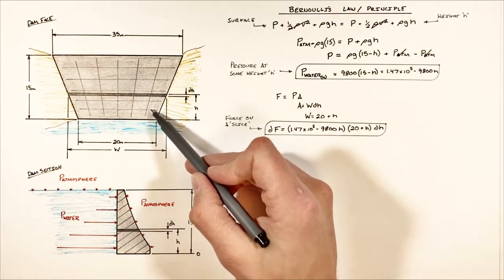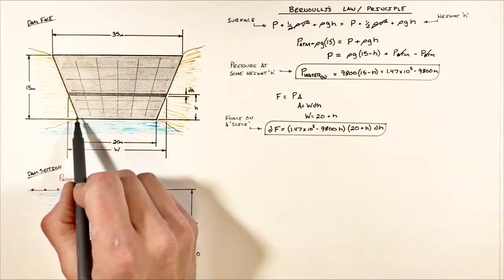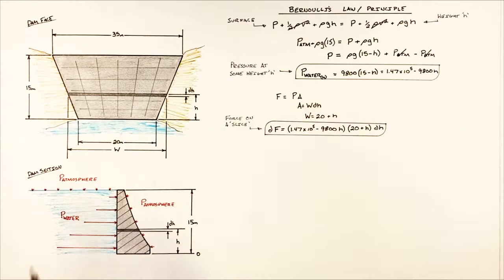So now if we want to find the total force against the entire dam face, what we need to do is add up all the forces on every slice of dam from a height of zero to a height of 15.